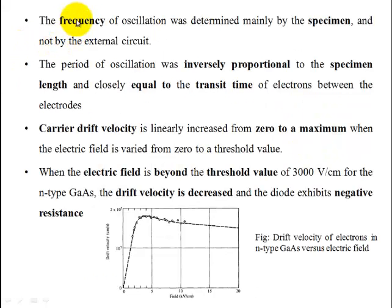The frequency of oscillations was different from the specimen length — it is inversely proportional to the specimen length and nearly equal to the transit time of the electron. The transit time is the time for one electron to travel across the device, and this determines the period of oscillation.